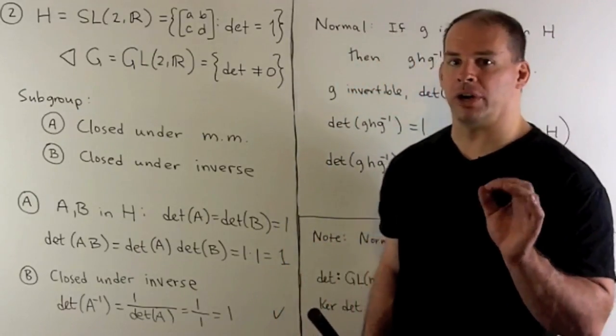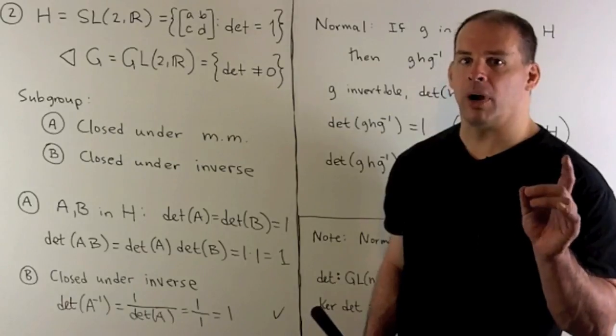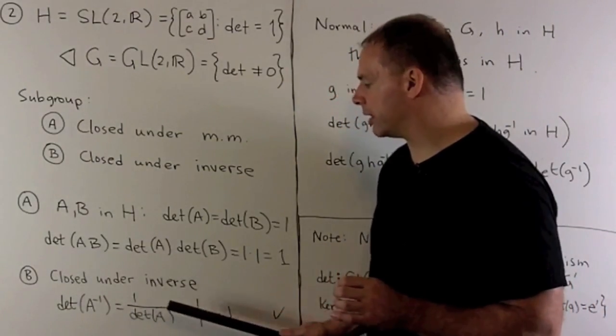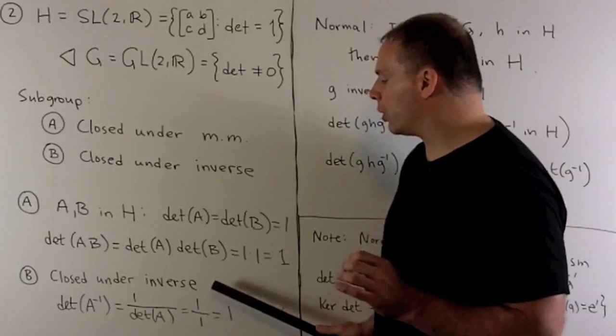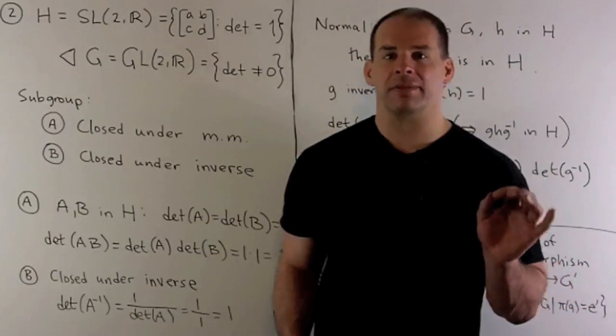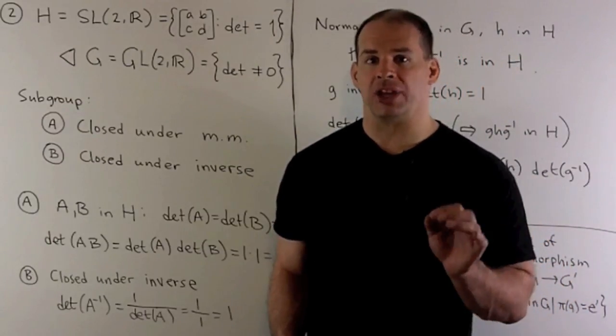For closure under inverses, we have our property determinant of A inverse equals one over determinant of A. So we're going to get one over one, so the determinant of A inverse is one. So that means A inverse is going to also be in H.